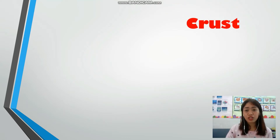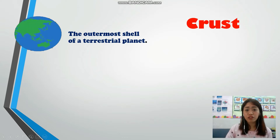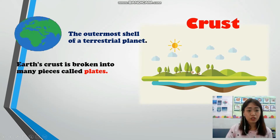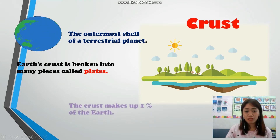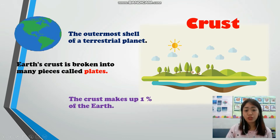Now let's continue with the first layer of the earth, which is crust. The outermost shell of a terrestrial planet. Earth's crust is broken into many pieces called plates. The crust makes up 1% of the earth.